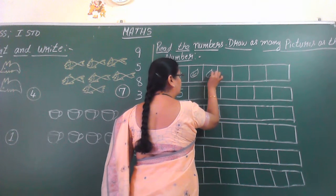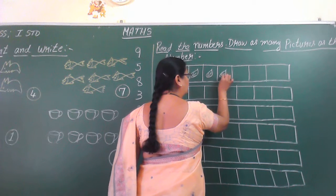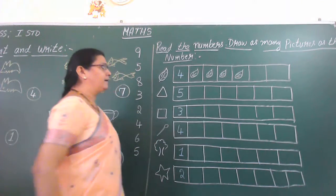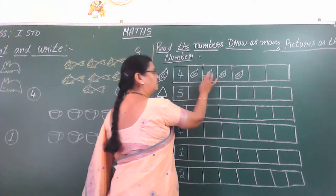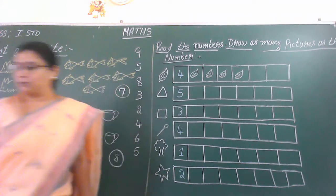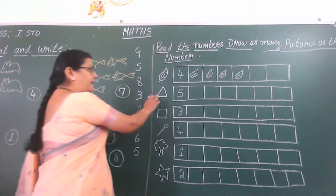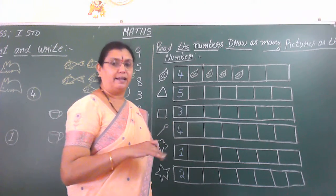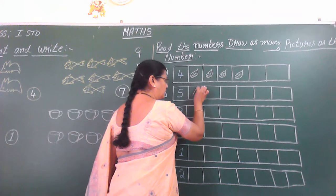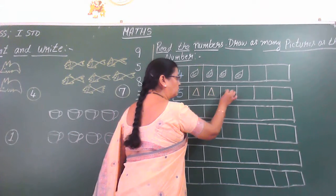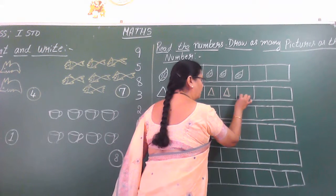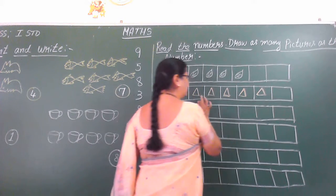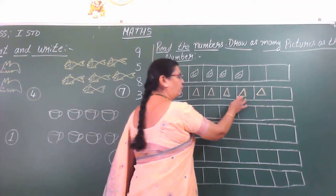One, two, three, four. So they have given number four. This side they have given one leaf, so we have to draw four leaves. Next one, what they have given? They have given triangle shape. What is the number they have given? They have given number five. So how many triangles you have to draw there? You have to draw five triangles. Count: one, two, three, four and five. How many triangles? One, two, three, four, five triangles.